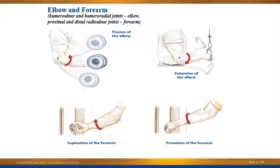At the elbow and forearm, the elbow is pretty simple — it's a hinge joint with flexion and extension. We also talked about supination and pronation of the forearm. That occurs at the proximal and distal radial-ulnar joint — supination is turning the palm up, and pronation is rotating the forearm down.